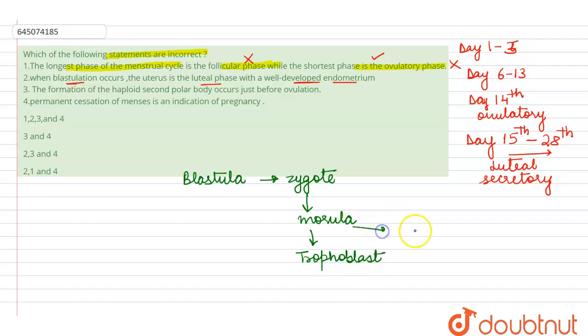That is trophoblast and the inner cell mass. So when the inner cell mass and the trophoblast is formed, this is the stage when it is called as blastula. So here we see when blastula is formed, it is after fertilization, so luteal phase will not be there because during pregnancy, that means pregnancy is now going to take place.